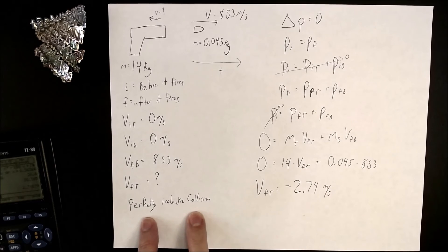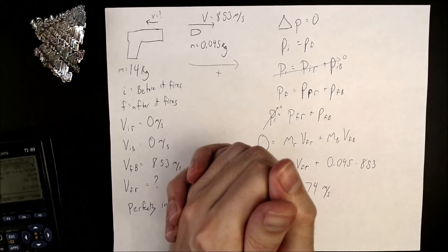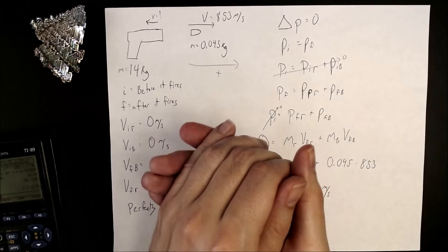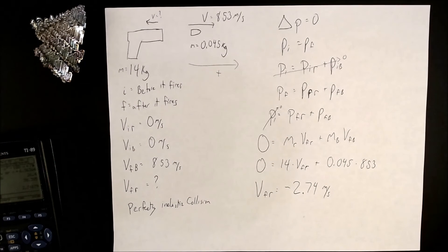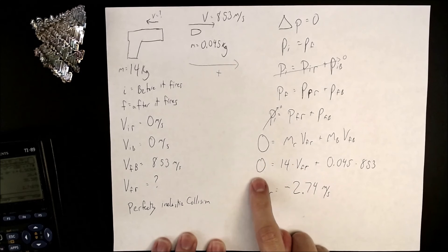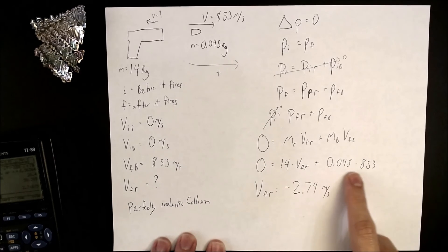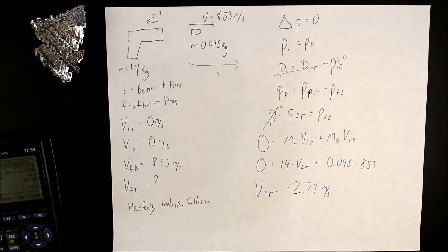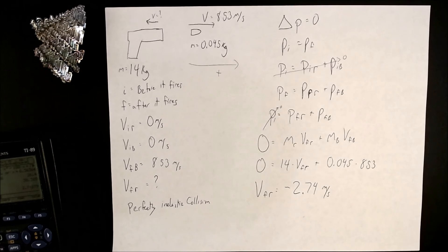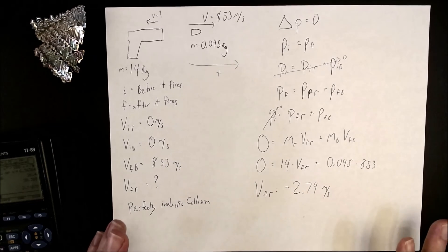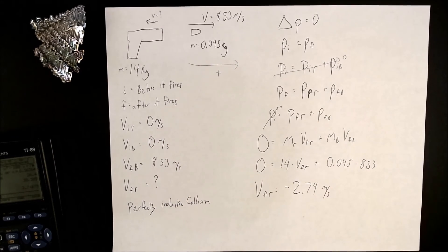Recoil problems look like perfectly inelastic collisions except backwards, because in recoil you have two things that separate out — they were connected at the beginning and then move apart. If they were not moving at the beginning, the initial momentum is zero and you find everything from the final momentum. That is what we're going to be doing for one-dimensional conservation of momentum. Next up is two-dimensional conservation of momentum, where we'll do all of this again in multiple directions. Until next time, have a great rest of your day.